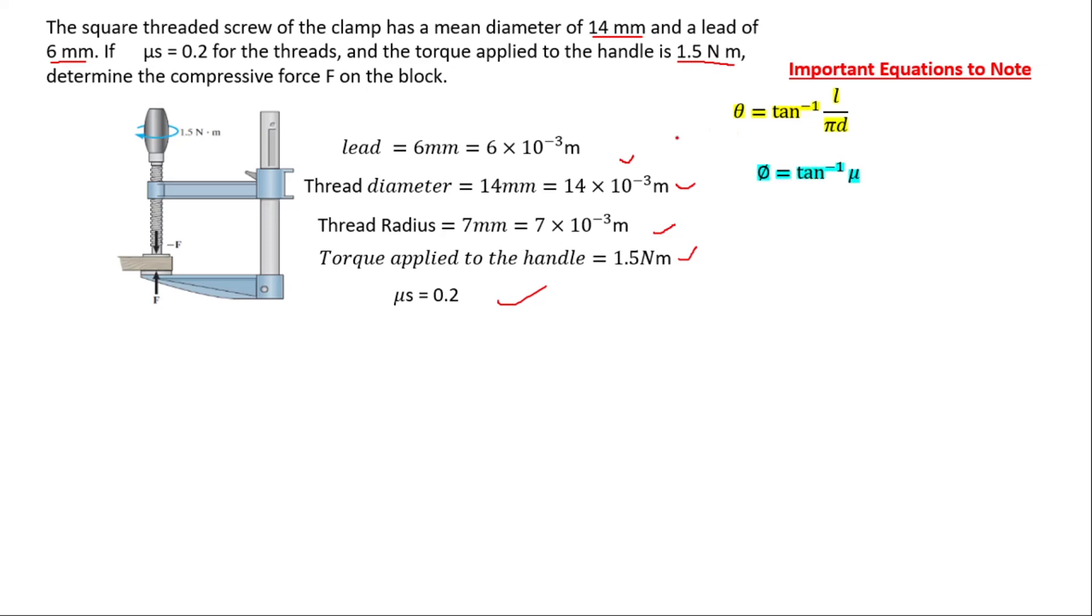The second one is phi, which equals tan inverse of the coefficient of static friction. Now phi represents the friction angle. The friction angle. We'll talk about the friction angle soon.